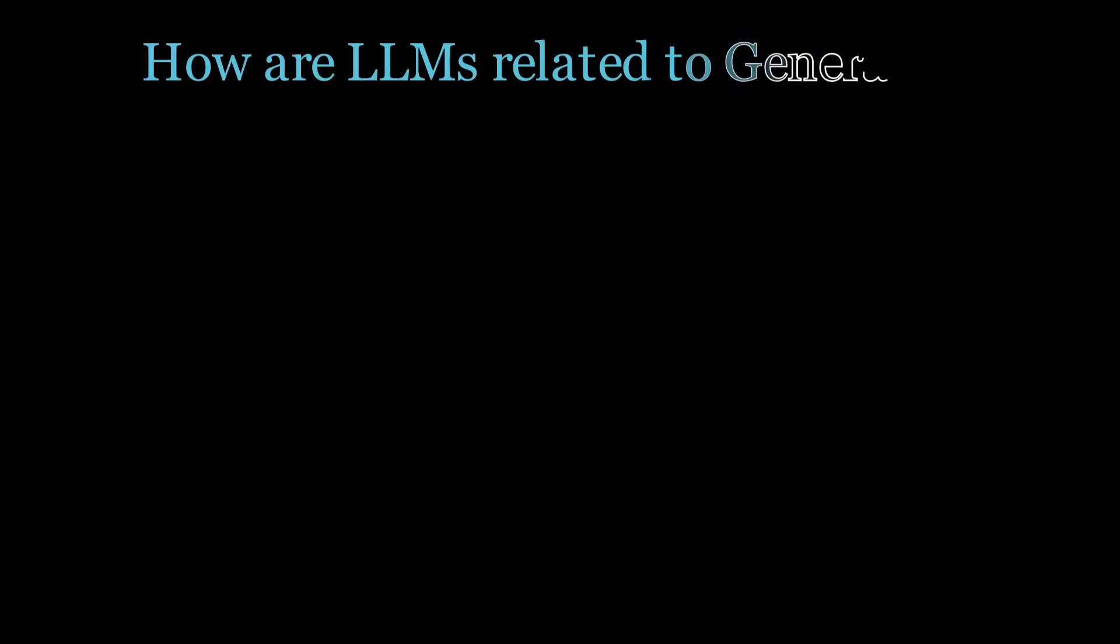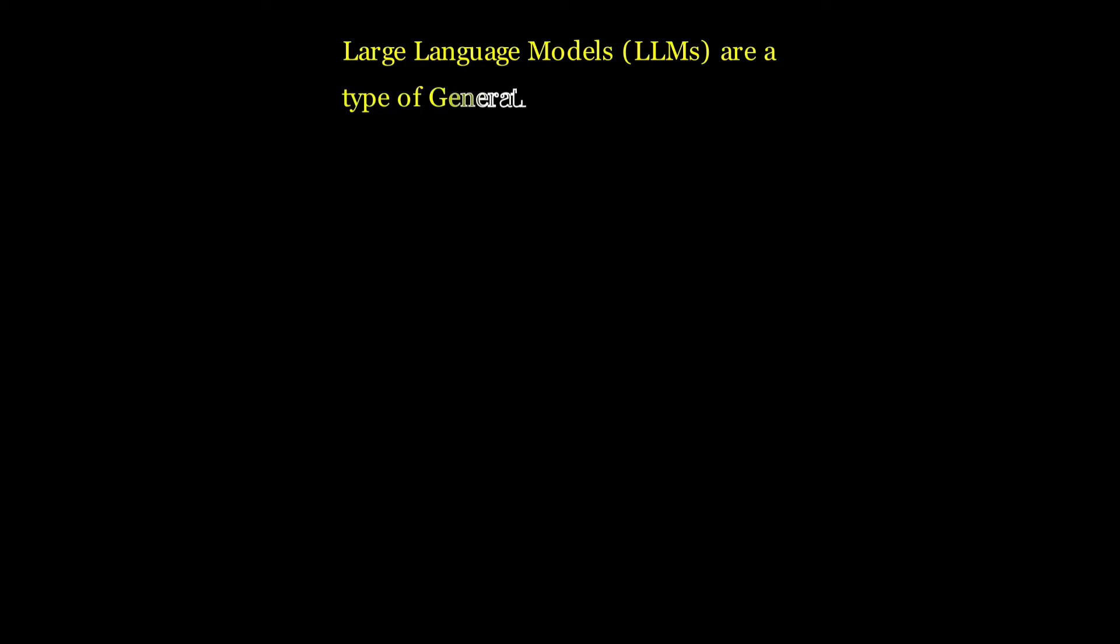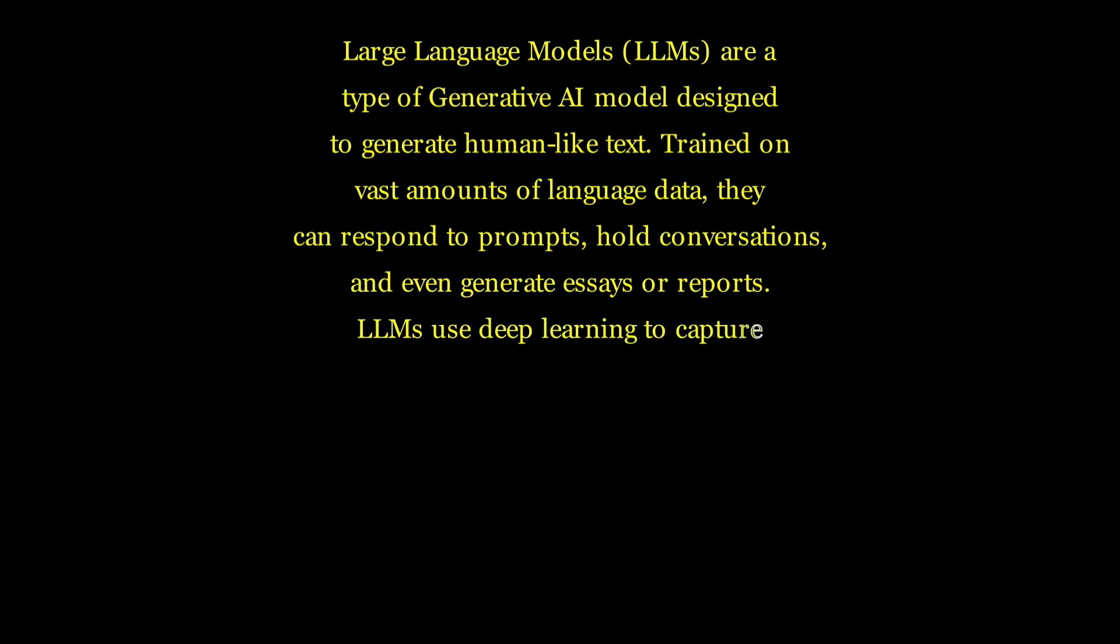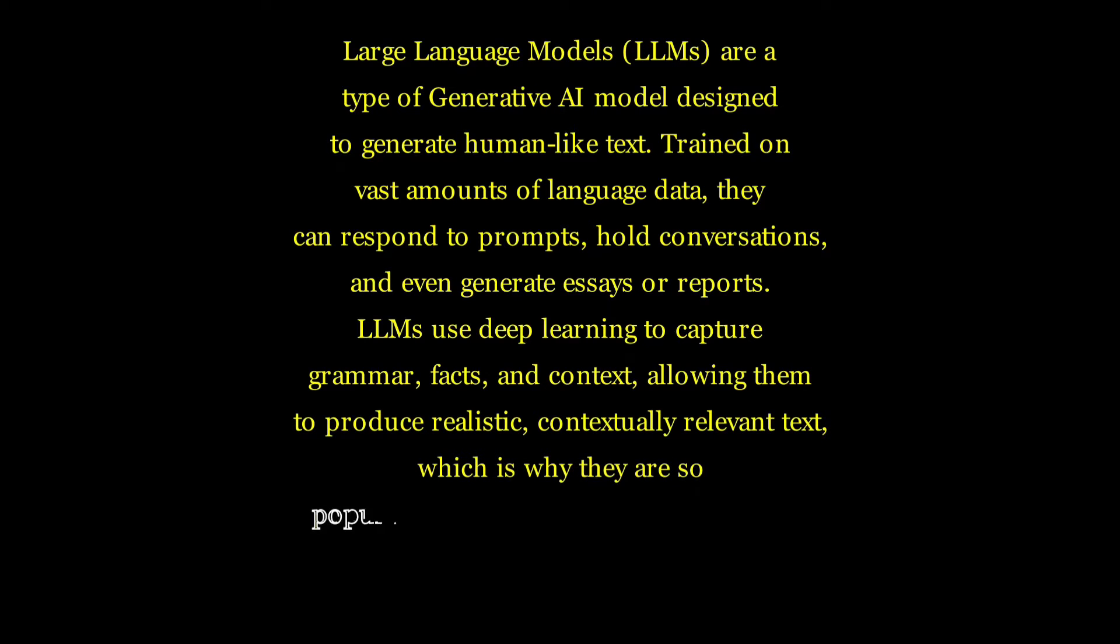How are LLMs related to generative AI? Large language models, LLMs, are a type of generative AI model designed to generate human-like text. Trained on vast amounts of language data, they can respond to prompts, hold conversations, and even generate essays or reports. LLMs use deep learning to capture grammar, facts, and context, allowing them to produce realistic, contextually relevant text, which is why they are so popular in chatbot and content generation applications.